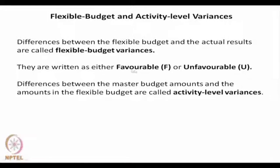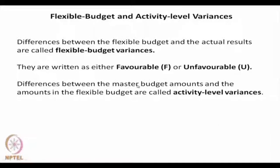Variances are written as either favourable with abbreviation F, or unfavourable with abbreviation U. For example, if the master budget had assumed a sale of 50,000 rupees in April but the actual appears to be much less — something like 40,000 — then this is an activity level variance of sales and this is unfavourable.